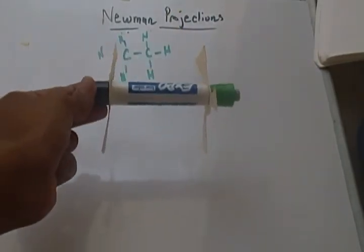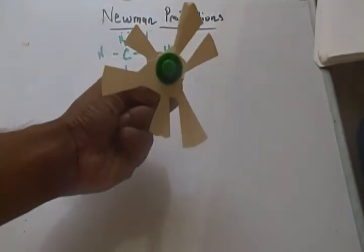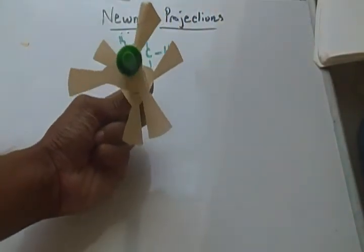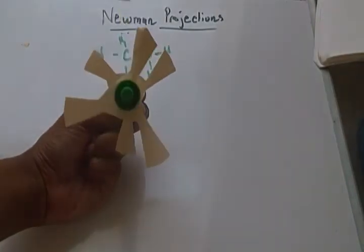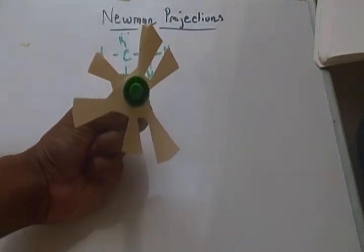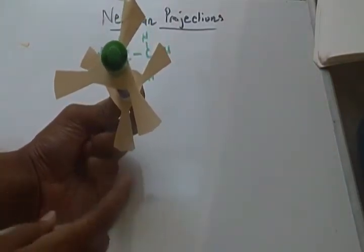So say this is my ethane molecule and I look at it from this way. I can see one carbon and I can see one, two, three hydrogens coming off of that carbon. I can't see the back carbon, but I can see the three hydrogens that are coming off of that carbon in the back.